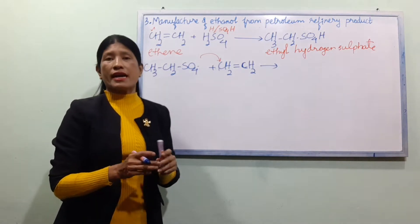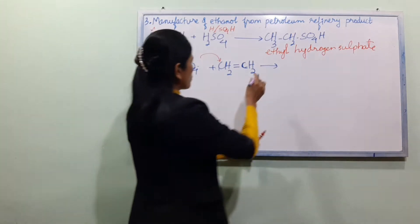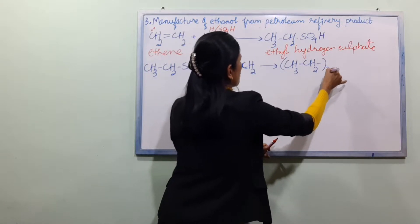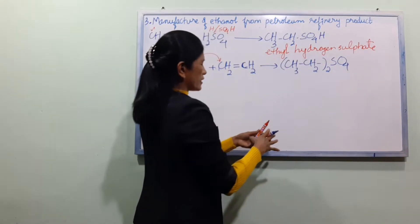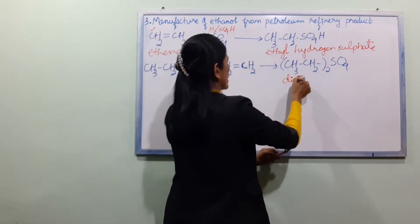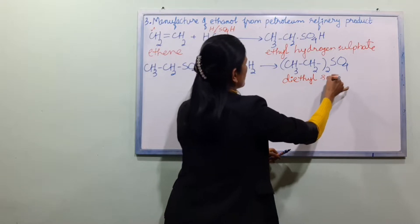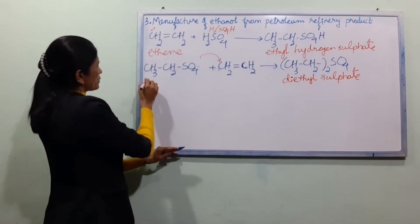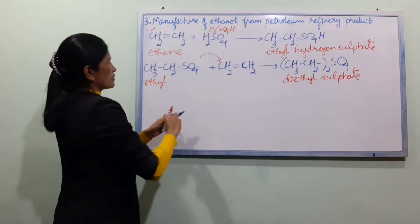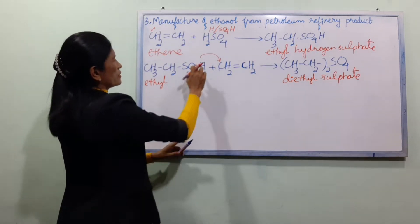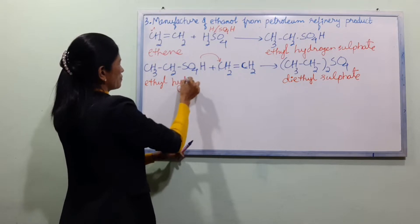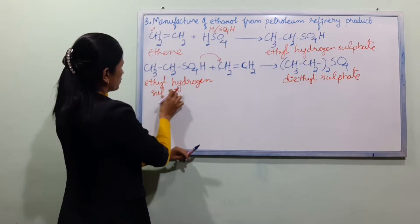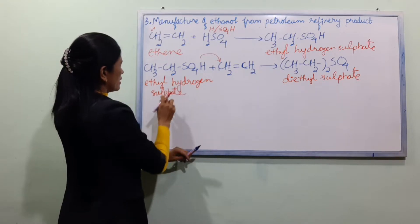If you want to use the organic compound, you can use CH3CH2 and SO4H. So this gives us ethyl hydrogen sulfate, E-T-H-Y-L H-Y-D-R-O-G-E-N S-U-L-P-H-A-T-E, ethyl hydrogen sulfate.